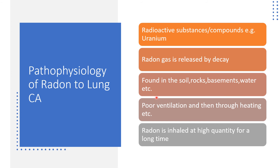The pathophysiology: radioactive substances like uranium release radon gas via the process of radioactive decay. This radon is found in soil, rocks, the basement of your house, and in well water. Poor ventilation and heating systems in the house allow radon to come up from the basement into our rooms. If radon is inhaled in high quantities over a long time, we are in trouble.